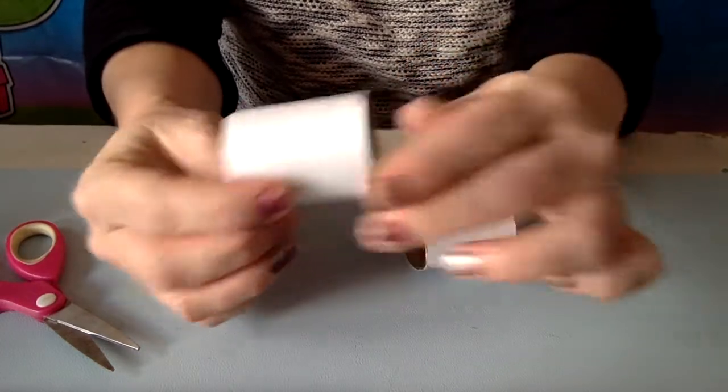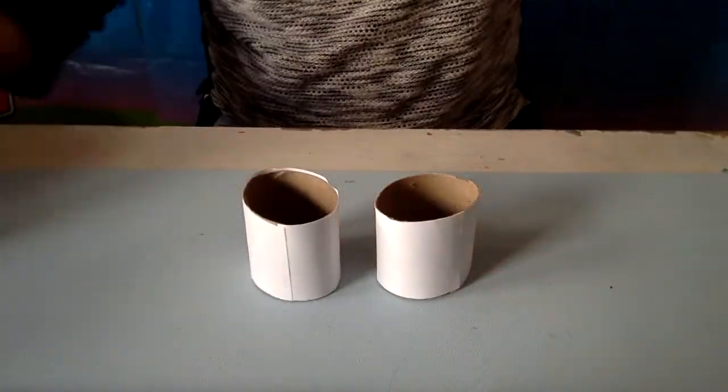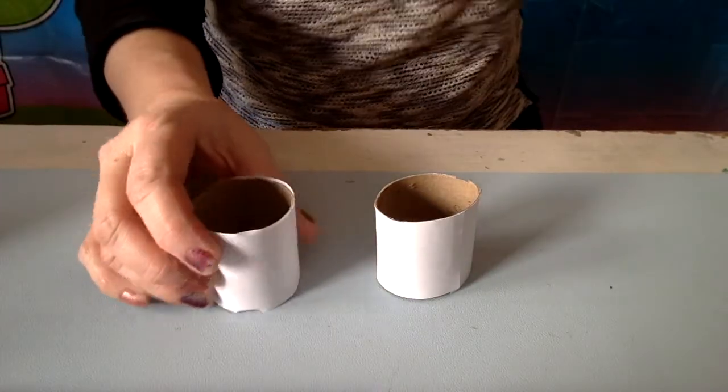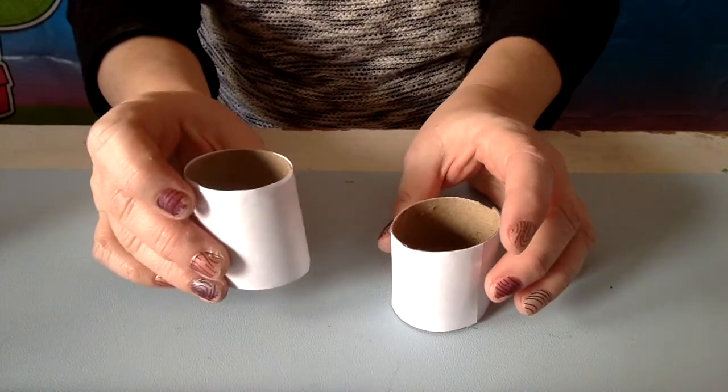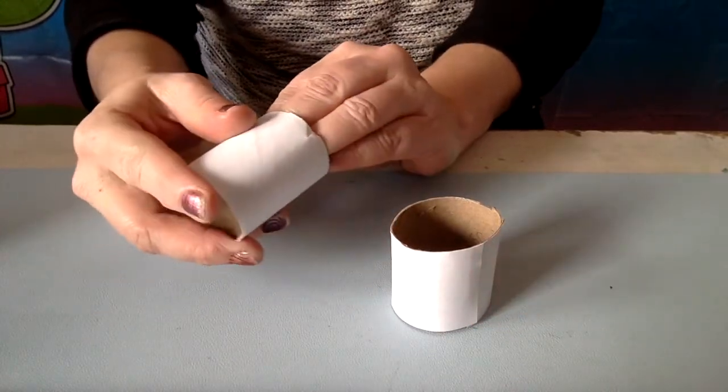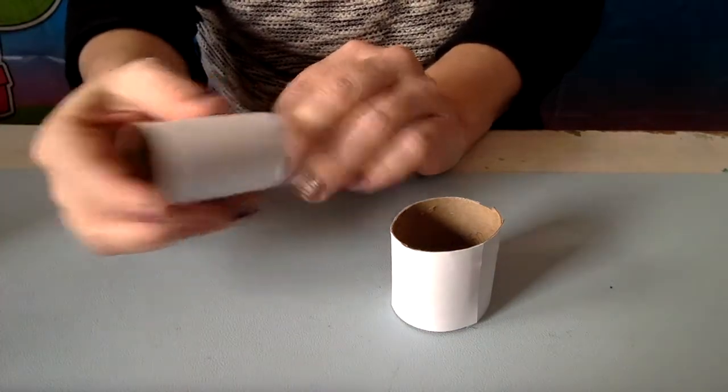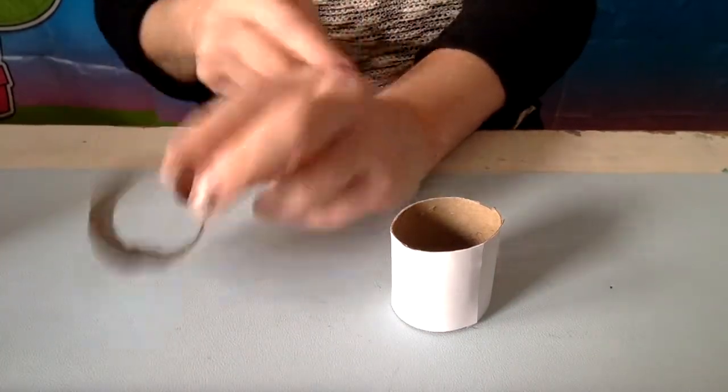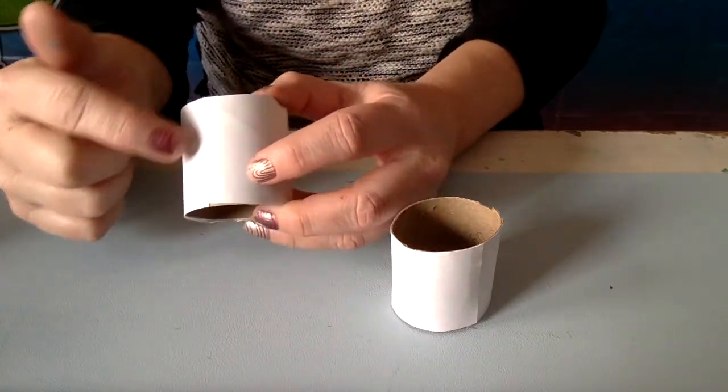And there we have it! Two pieces of tube that are covered in white paper, ready to become magical superhero cuffs. So another thing about this is, oh wait a second, if you try it on, hey it's too small! How am I supposed to get it around my wrist?